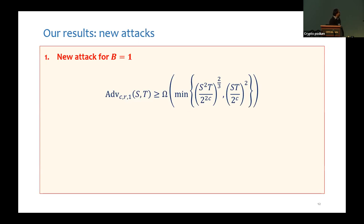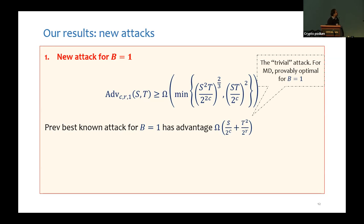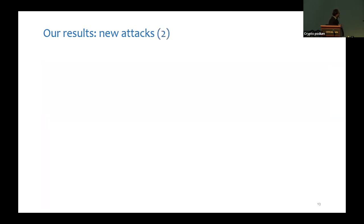In more detail, we have a new attack for B equals one. The previously best known attack for one-block collision was essentially the trivial attack, where the adversary remembers collisions for S different IVs in the pre-processing phase, and if the IV received in the online phase was not among those, it just does a birthday-style attack. For Merkle-Damgård this trivial attack was provably optimal. However, the new attack for sponge is actually better than the trivial attack for certain parameter ranges. For example, when c and r are the same, for S equals 2^(4c/5) and T equals 2^(c/5), our attack has constant advantage while the trivial attack has advantage exponentially small in c.